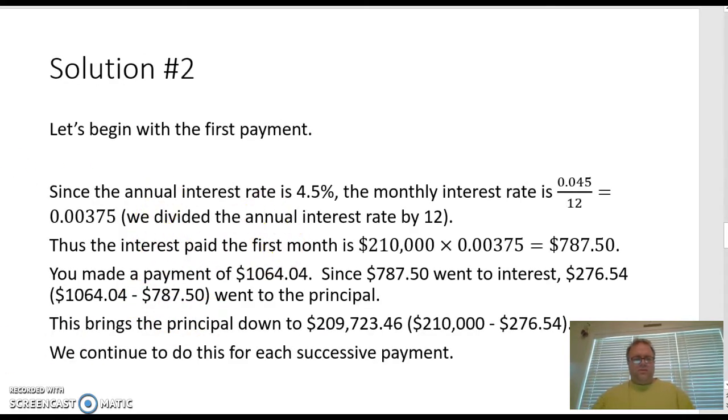Since the annual interest rate is 4.5%, that's over the year, then our monthly interest rate is just that divided by 12, which comes out to 0.00375. Therefore, if the interest rate for each month is that, then the first month our total interest that we're paying is that interest rate, the 0.00375 times the total amount of the loan, the $210,000, which comes out to $787.50. That's a lot of interest that we're paying that first month.